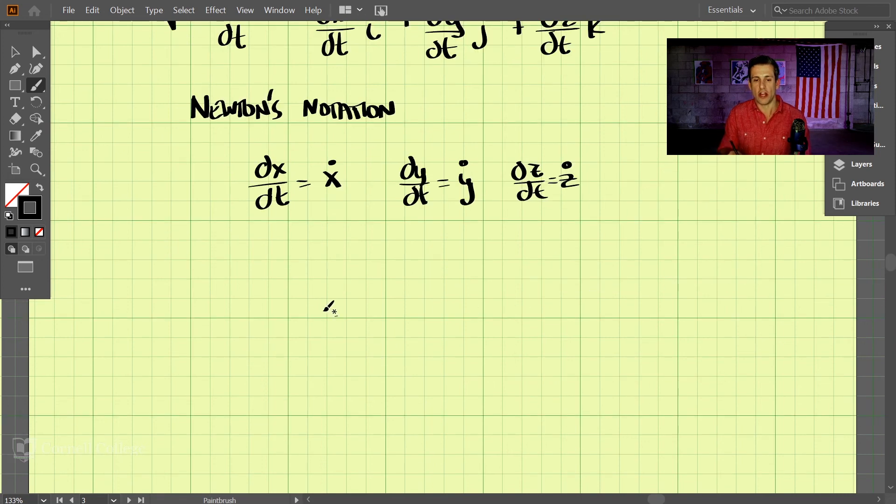So these equations become much simpler to write. The velocity vector is just x dot i plus y dot j plus z dot k. And that's one way to write it.